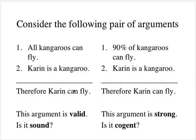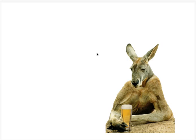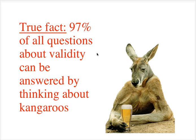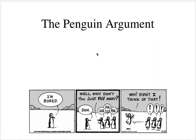So you should memorize this kangaroo argument, because it's going to come up over and over again. In fact, I would claim that about 97% of all the questions about validity can be answered just by thinking about the kangaroo argument. And those that can't can often be answered by thinking about the penguin argument.